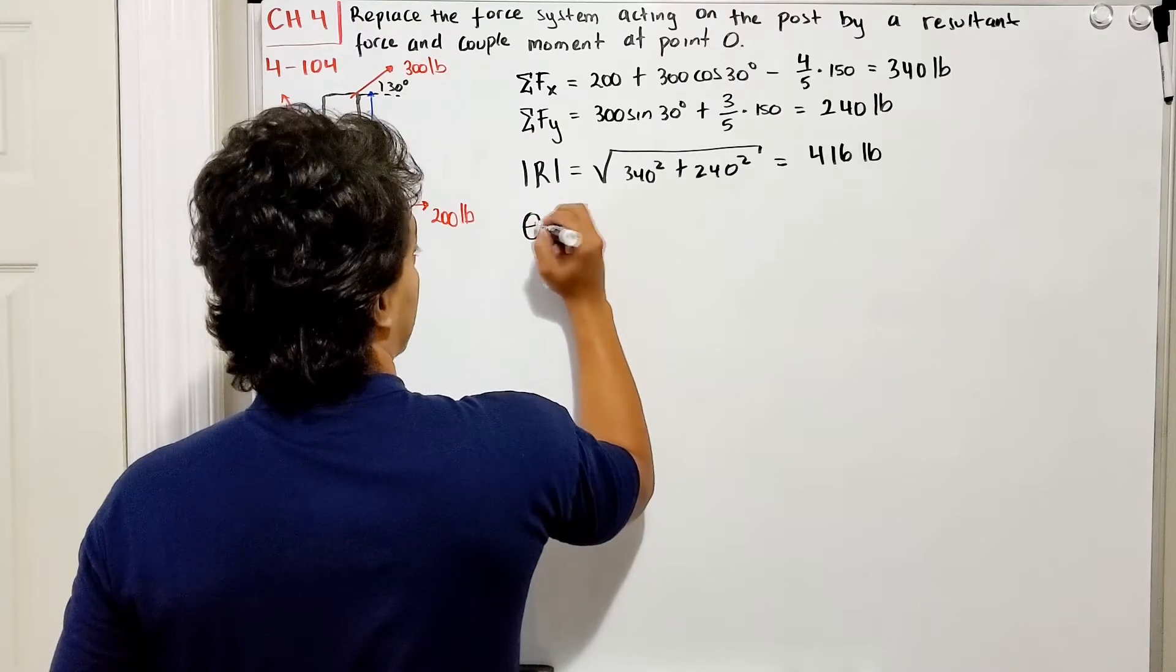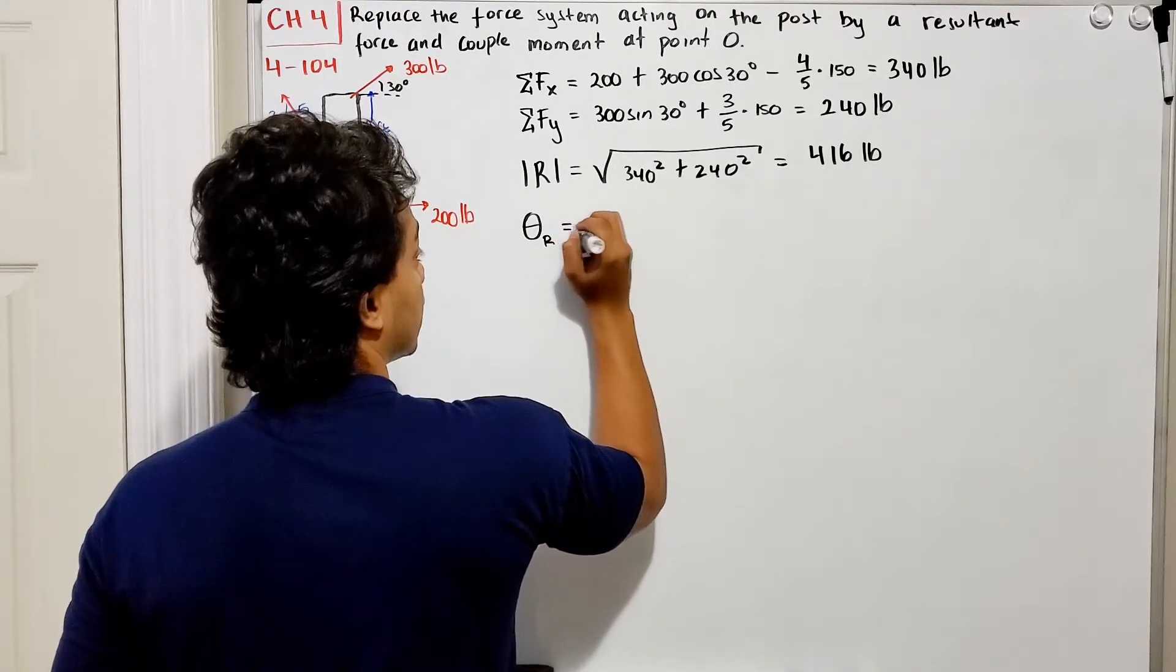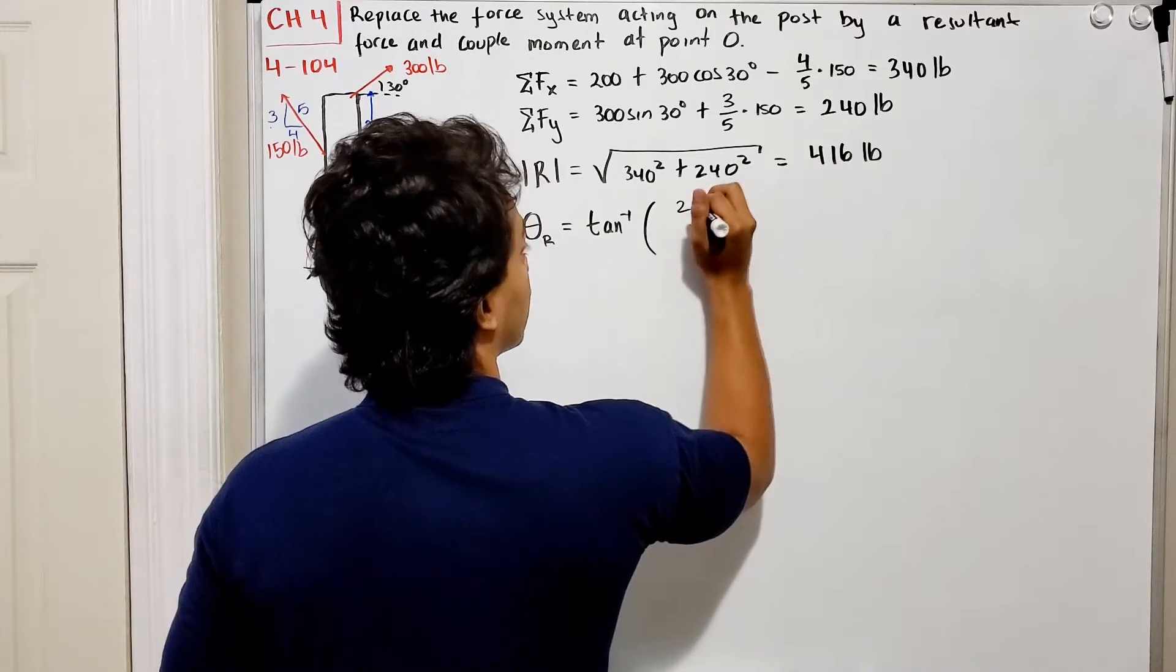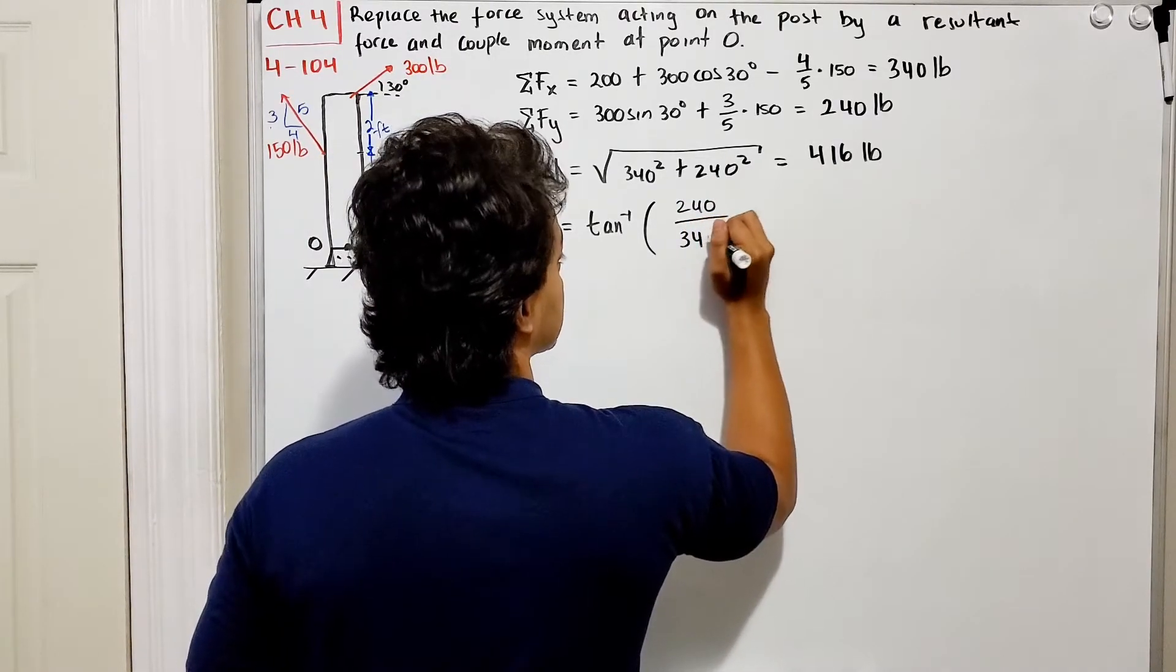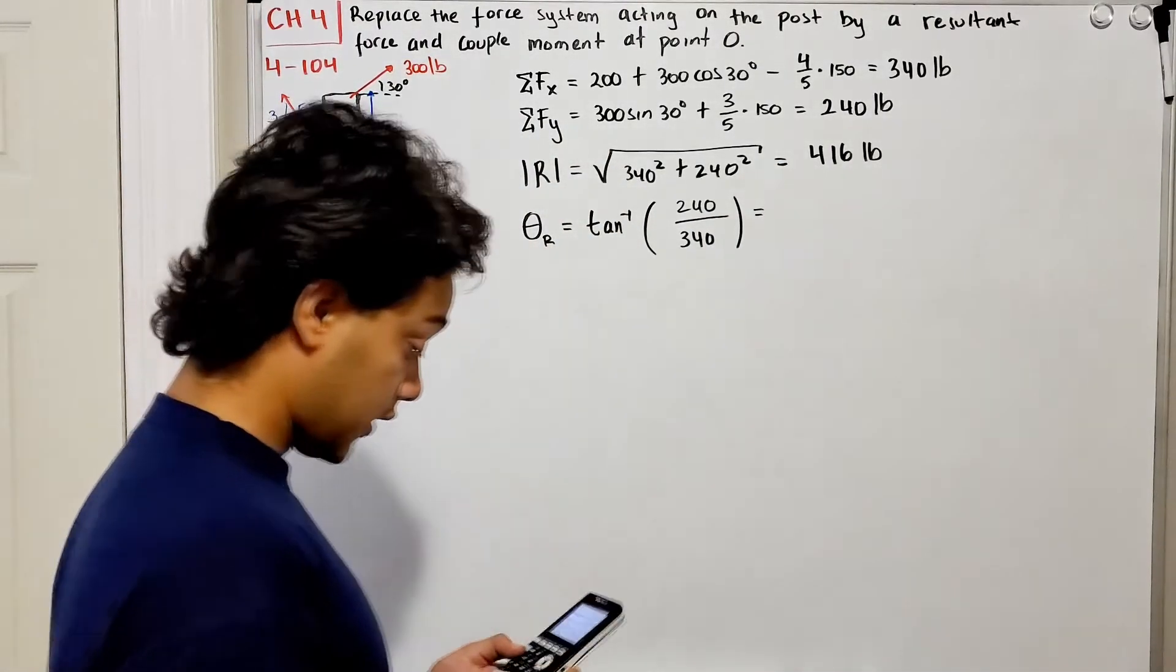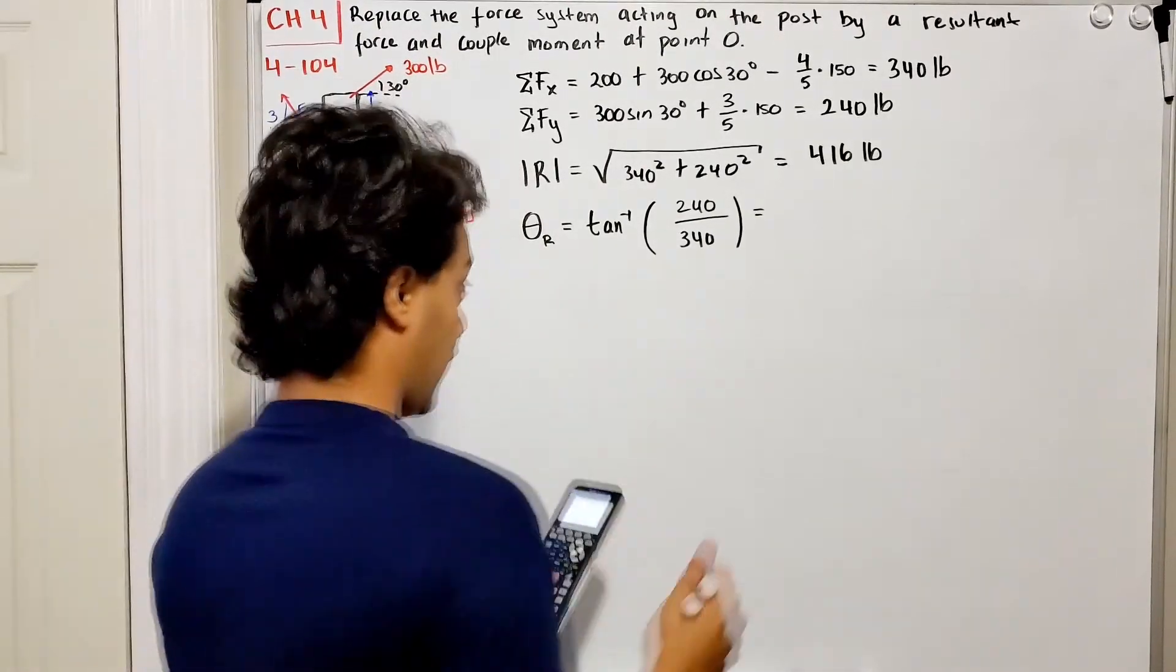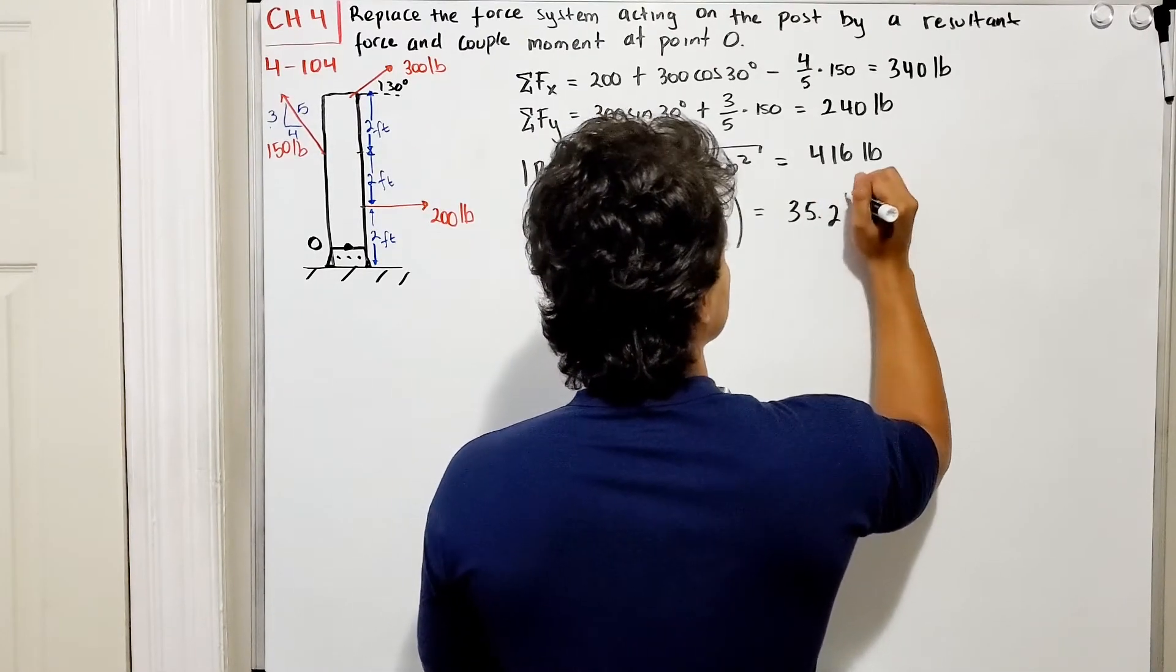What about my angle theta? In which direction is this resultant force? I'm going to do the inverse tangent of the opposite, which is my y, so 240 divided by my x, which is 340. If I do that in the calculator, inverse tangent of 240 divided by 340 gives me 35.2 degrees.